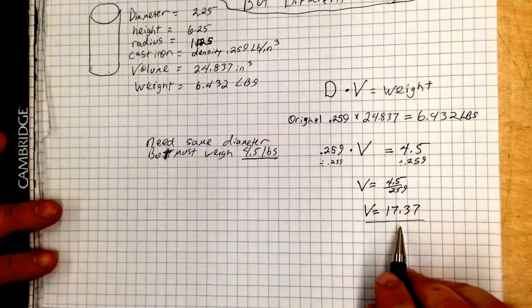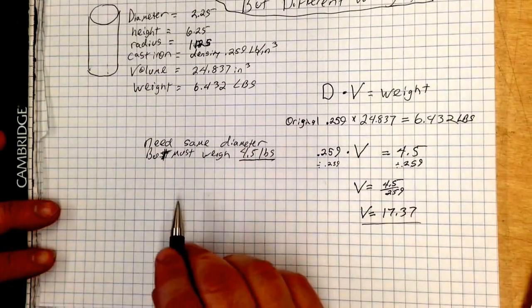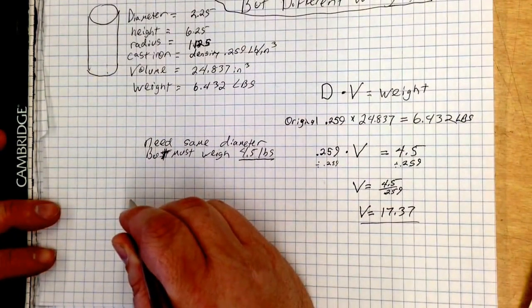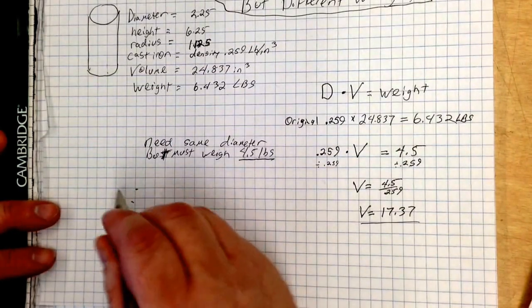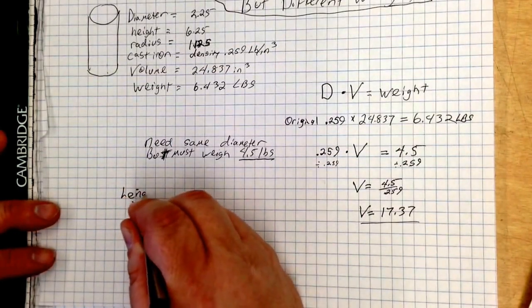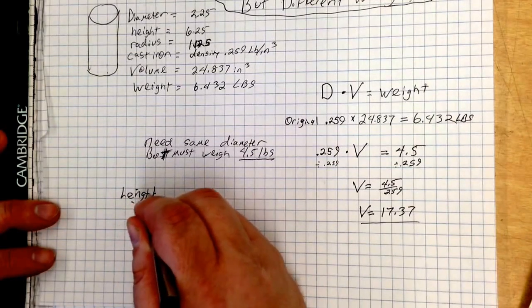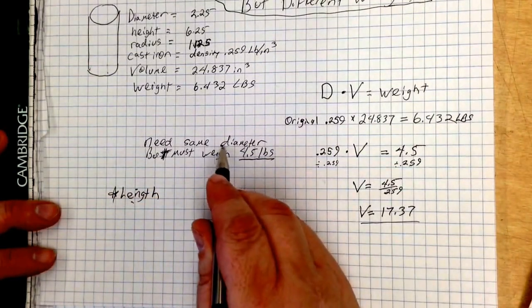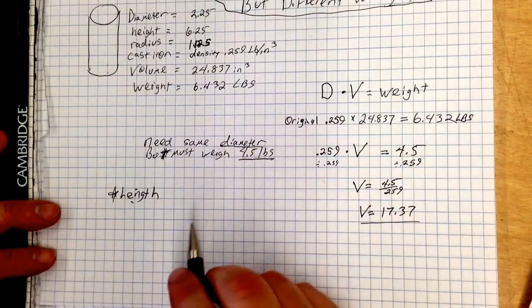So, I'm going to move this up. We have our volume. I'm going to switch over here. Now, we need to get our diameter, or our length, excuse me. So, if I put length, we need the length of this. Because, again, the diameter is the same.